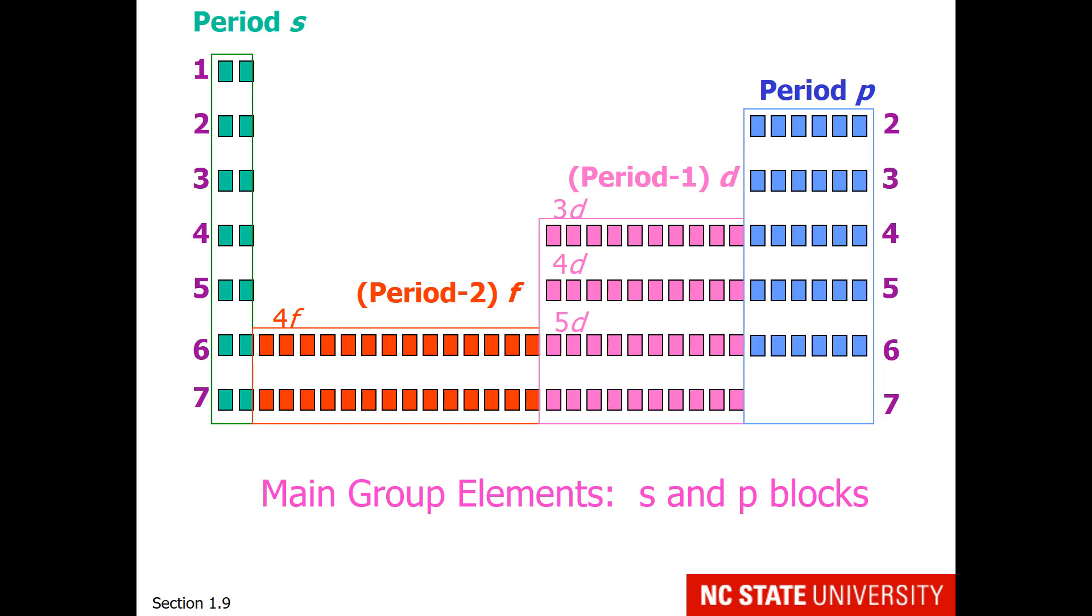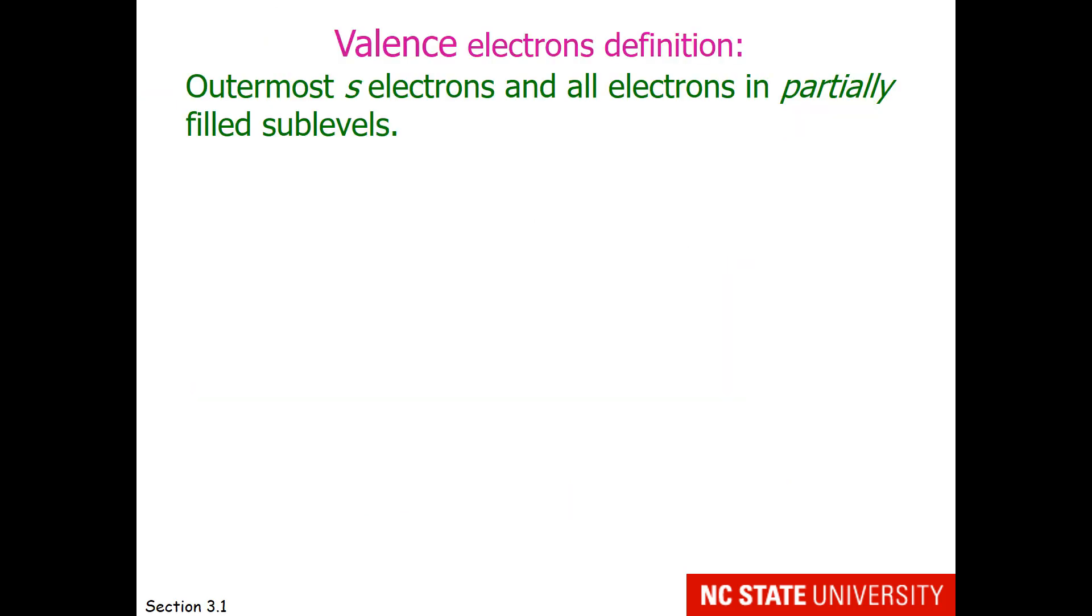Going back to our periodic table, one of your vocabulary words in the past was main group elements, and now that you're familiar with the Schrodinger model, this involves the S and P blocks. So that would include columns 1 and 2 for period S, and the last 6 columns for period P. Here is your valence electrons definition. This includes the outermost S electrons and all electrons in partially filled sublevels. For main group elements, this would be the last row with period S and period P electrons.